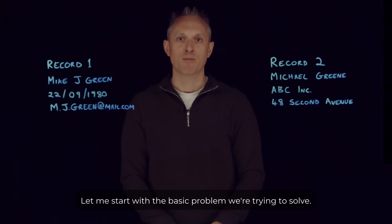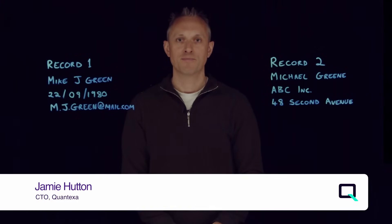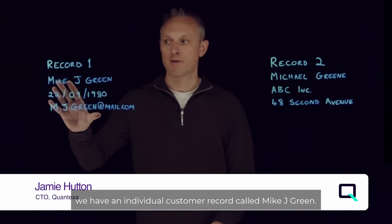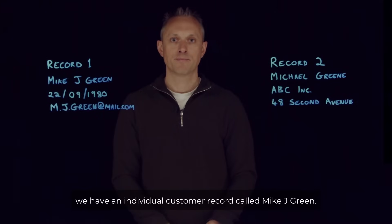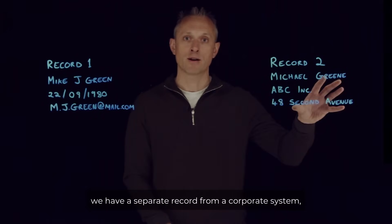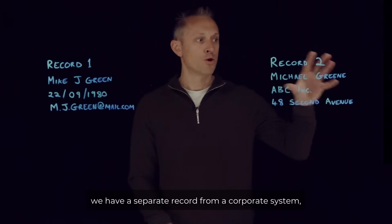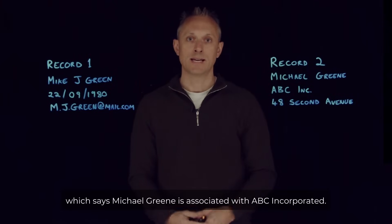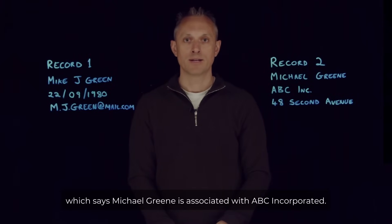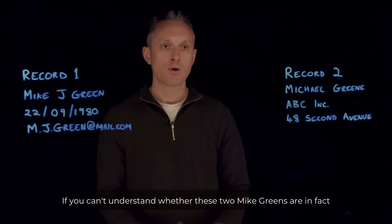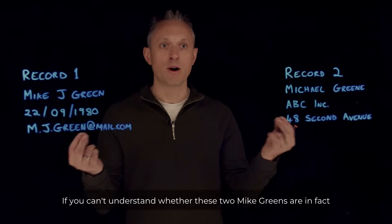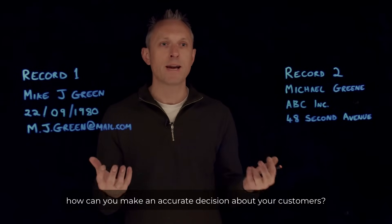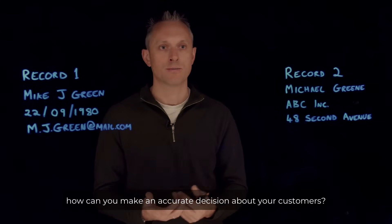Let me start with the basic problem we're trying to solve. Over on this side, we have an individual customer record called Mike J. Green. And over on this side, we have a separate record from a corporate system which says Michael Green is associated with ABC Incorporated. If you can't understand whether these two Mike Greens are in fact the same person or not, how can you make an accurate decision about your customers?